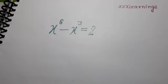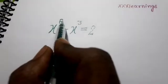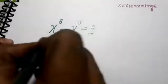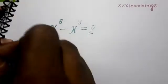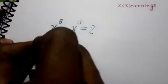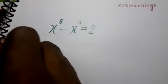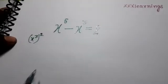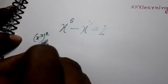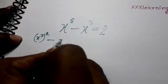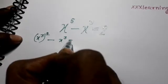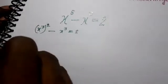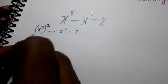Next, we are learning x to the power 6 minus x cube equal to 2. We can write this equation in this format: x power 3, squared, then minus x cube equal to 2.